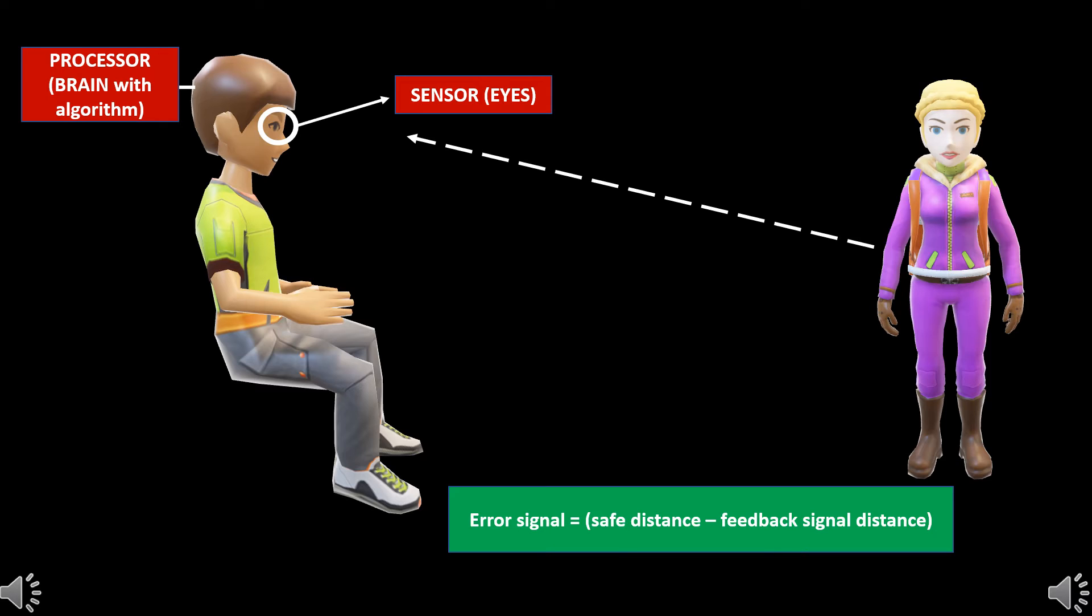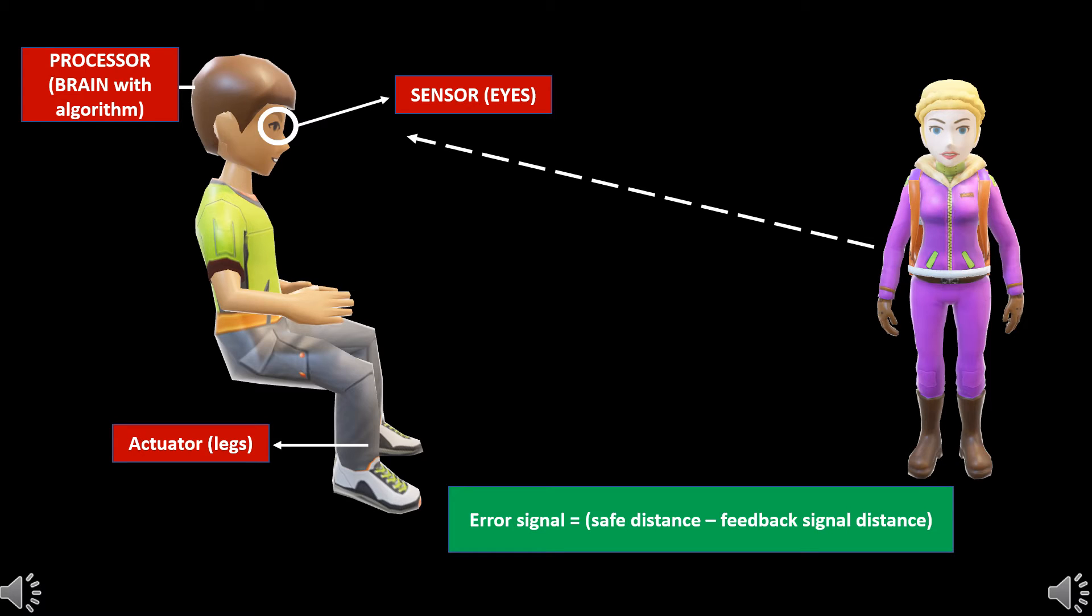This difference is called the error signal. The decision is taken by the algorithm stored in the brain. The output command is then sent to the legs which are the actuators. So this is an example of a control system. As the brakes or accelerator is pressed, the distance is being continuously monitored and sent to the brain by the eyes. This distance signal input is the feedback. Based on the feedback, the output signal from the brain changes continuously. This is closed loop control system.